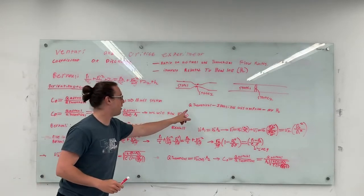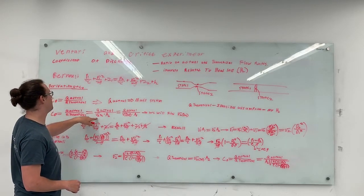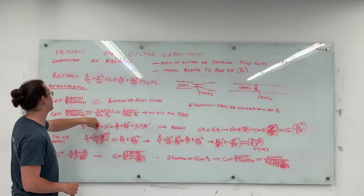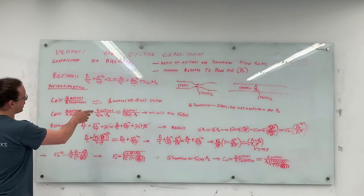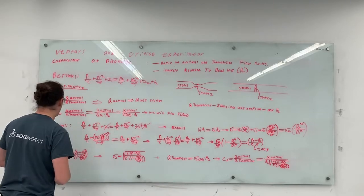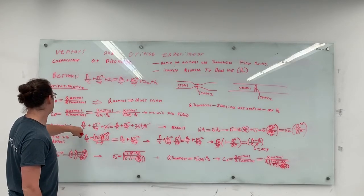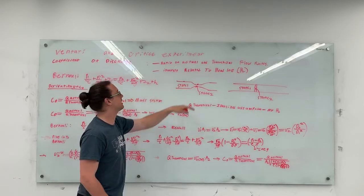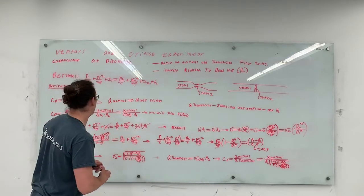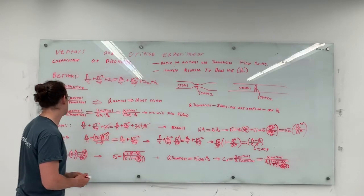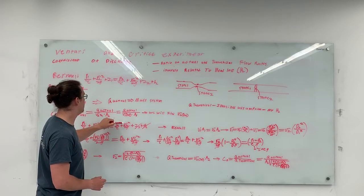Now, what we want to do is figure out what q theoretical can be. You have q theoretical, which — since you have two states — is either v2 theoretical times a2, or v1 theoretical times a1. We'll find v2 theoretical times a2, as that's the one chosen for the lab. Since we know we're not gaining height in this lab — it's all on one horizontal plane — z1 equals z2 and they cancel out. For this idealized assumption, we also eliminate the head loss. Our Bernoulli equation becomes p1 over gamma plus v1 squared over 2g equals p2 over gamma plus v2 squared over 2g.